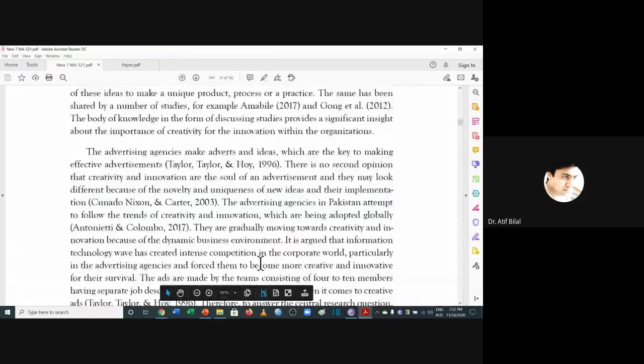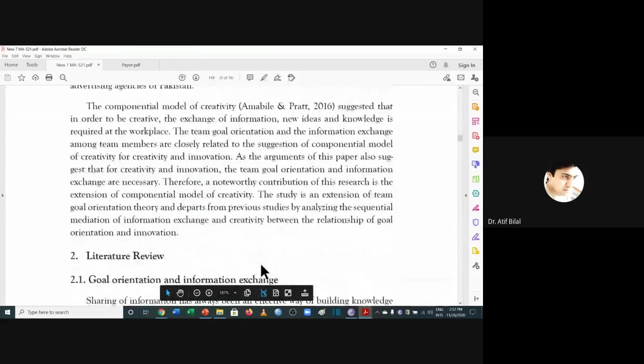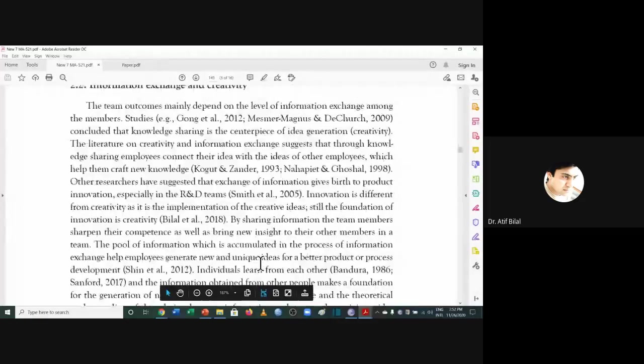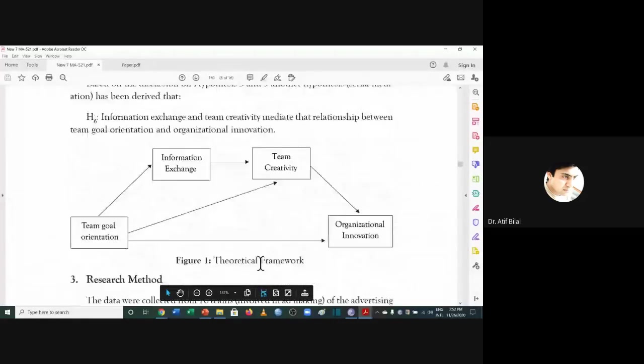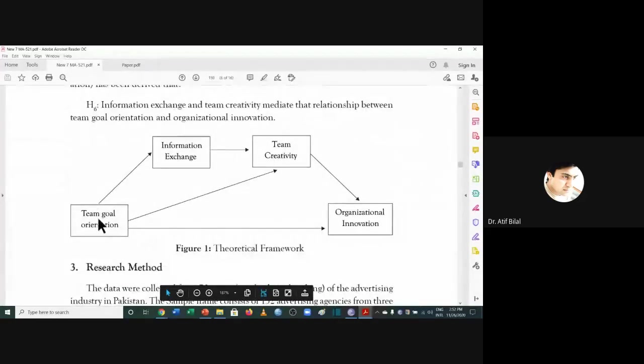Then you can always scroll down and you can look at if there is a theoretical framework. For example, this is an independent variable, these are the two mediators, and this is a dependent variable that has been used. Now, if you like this paper, what we can do is we can just click control F and we can find the word future.